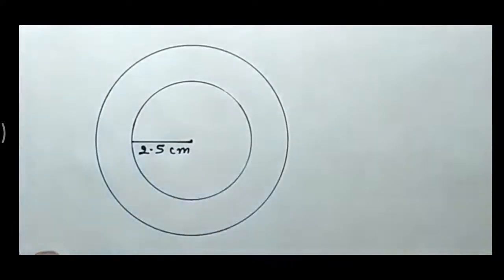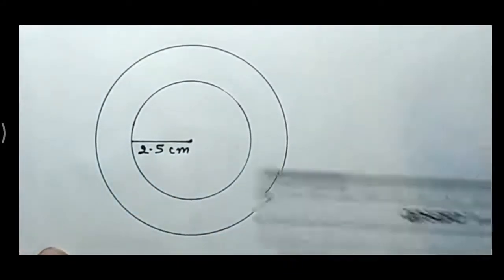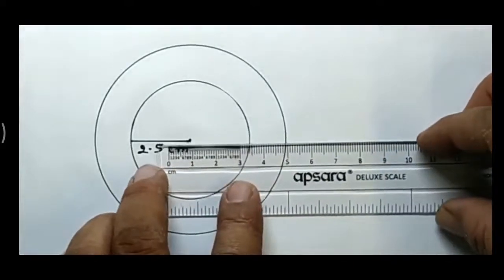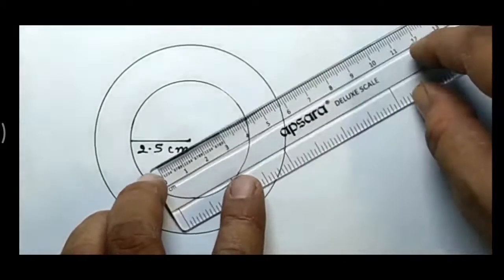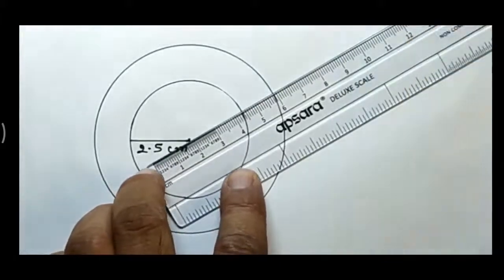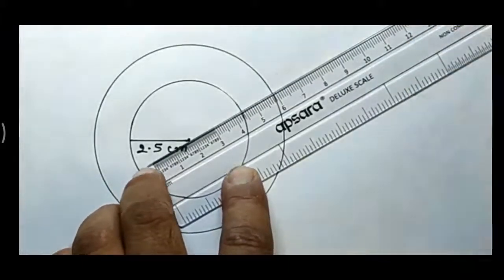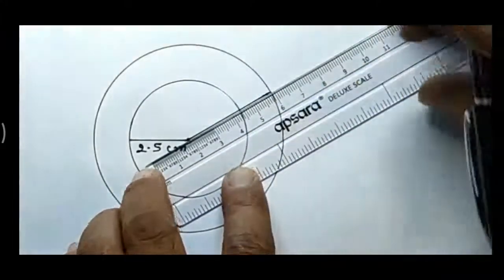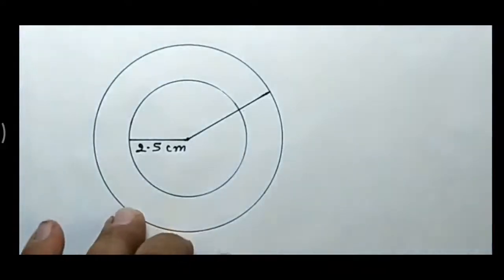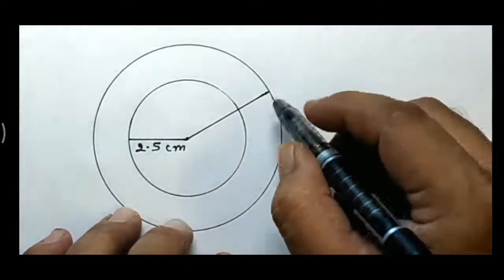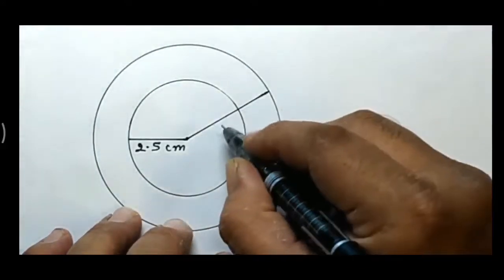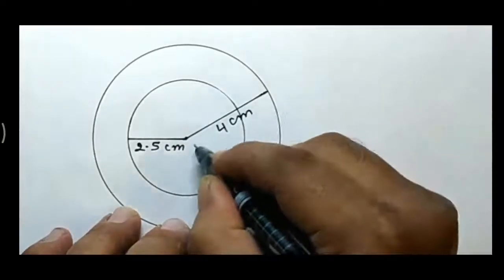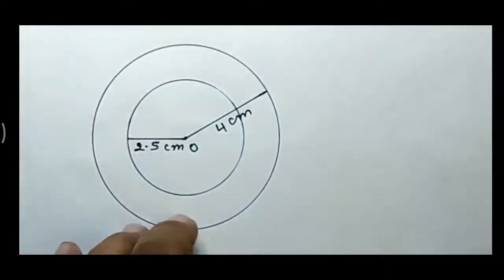This is the interior circle. The second radius of the outer circle I am drawing from the center to the point of the circle — this is 4 cm. I will write here 4 cm. The length of this radius is 4 cm and I have marked O.